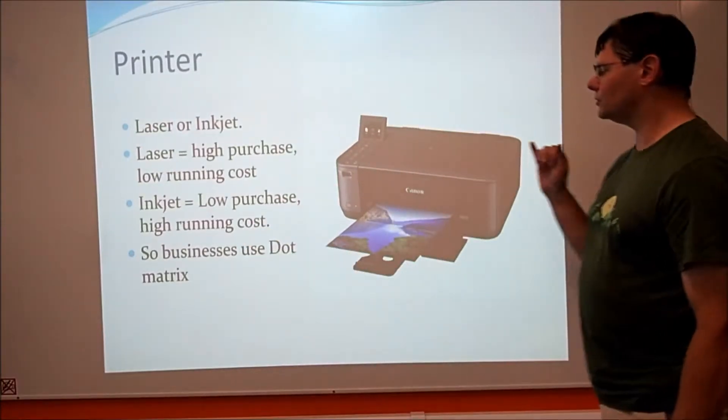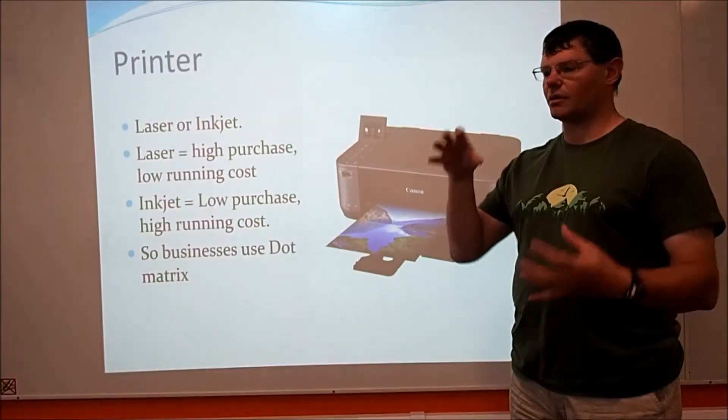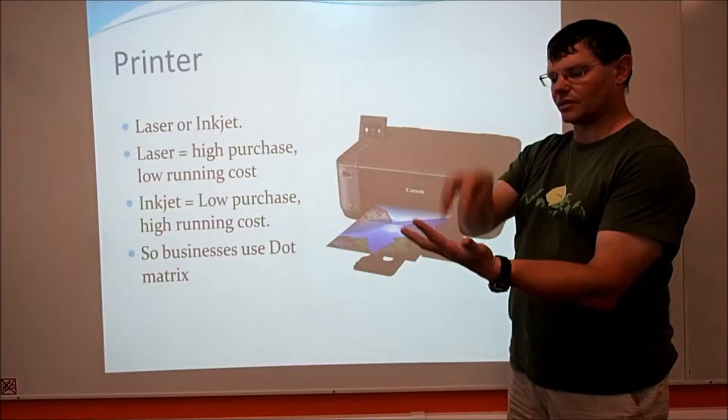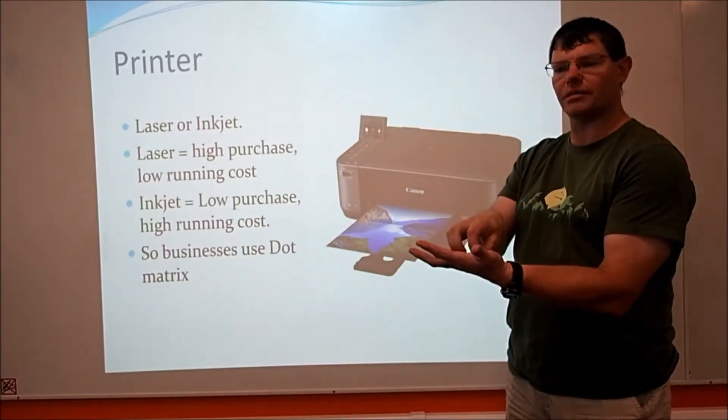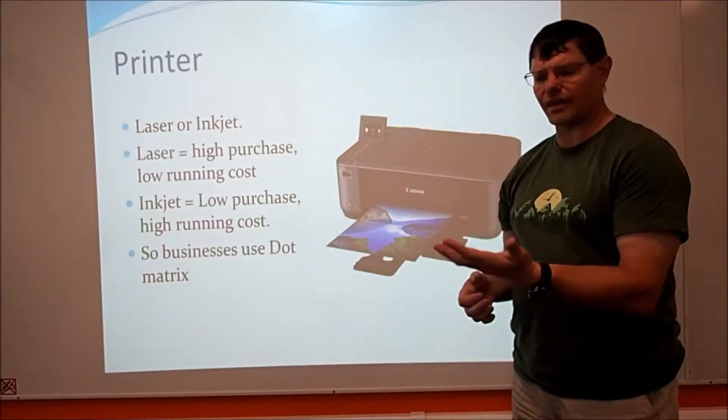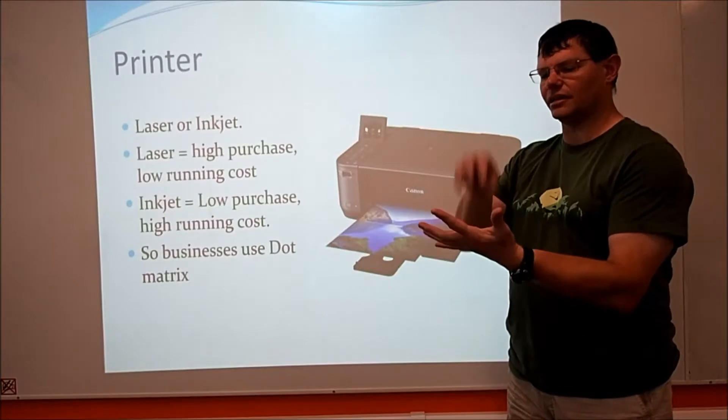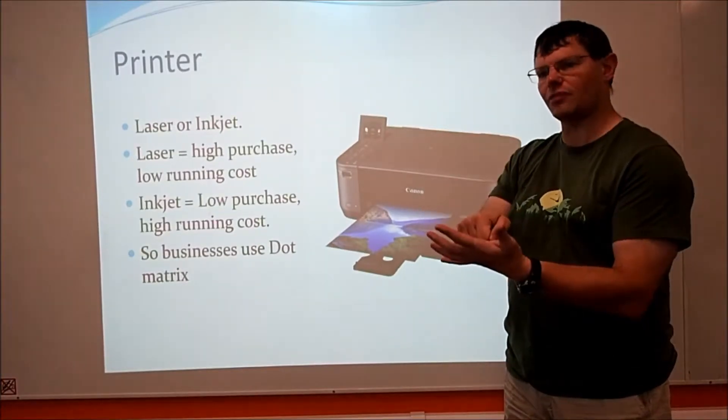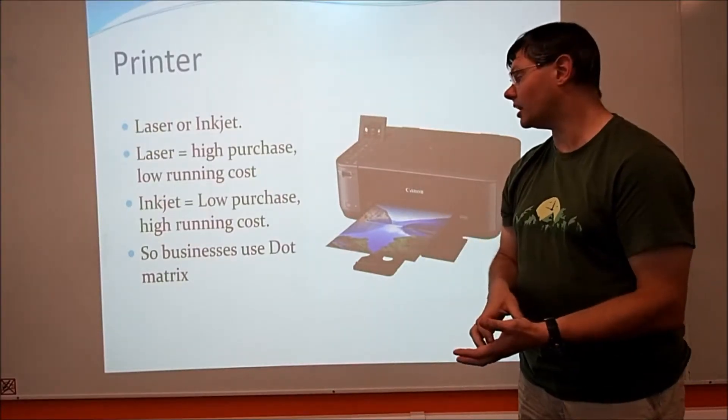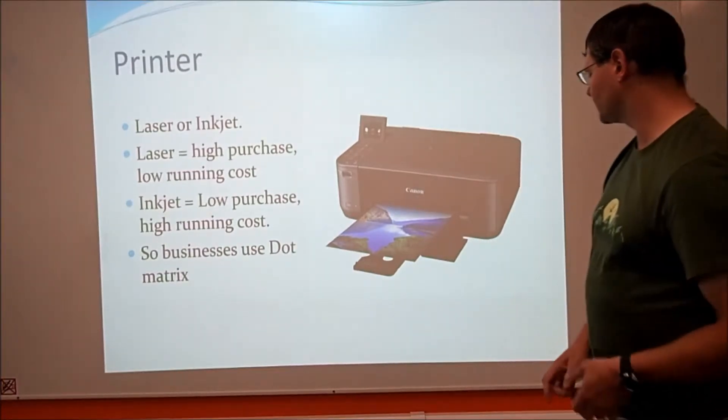Some businesses use dot matrix printers, not much anymore. If they do, it's normally on receipts. Dot matrix printers are basically a cluster of little pins that bash the number or letter onto a piece of paper, just hits it and leaves an imprint. Those are often used in places like Screwfix where they have carbon paper, a bit of paper with the equivalent of ink on it. When you bash it, it prints on the first page and also prints onto the second page as well, so you end up with a carbon copy. Some businesses still use that, but it's getting a bit old hat. Most just use inkjet or laser printers.